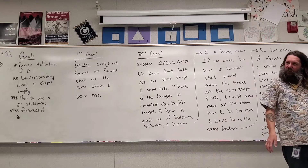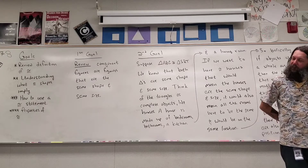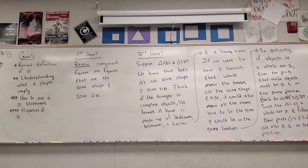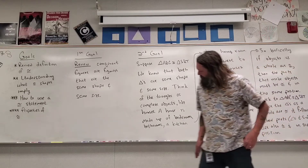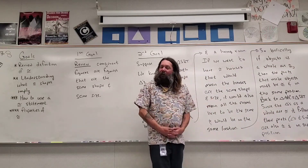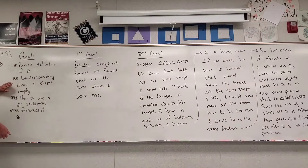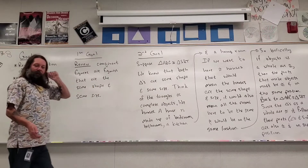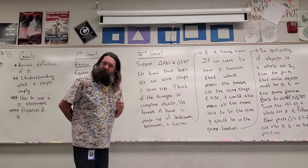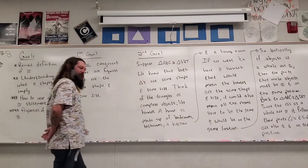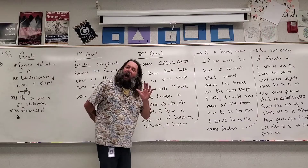If you have two identical cars, then the parts that make the cars must be identical and in the same position. Back to triangle ABC being congruent to triangle SRT — since the triangles as a whole are congruent, it follows that their parts, which are just angles and sides, are also congruent and in the same position. That's what congruent shapes imply: the parts that make them must be congruent.